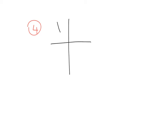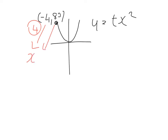Example 4 — just more practice, the same kind of thing. This time y equals tx squared, just getting you used to having the unknown as different letters. The point is (-4, 80), so when x is -4, y is 80. Sub that straight in.